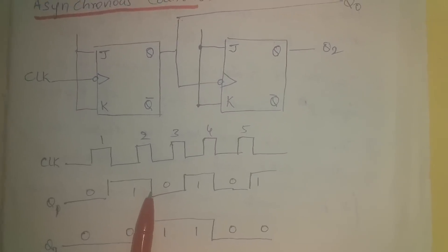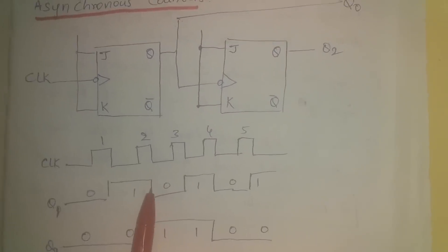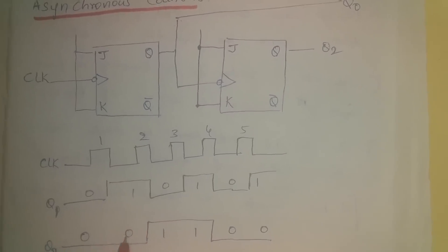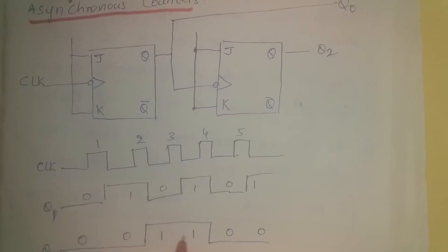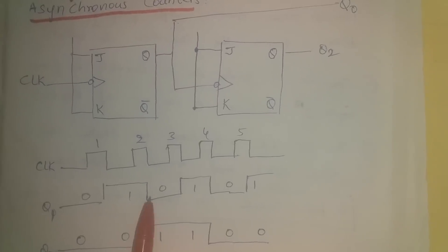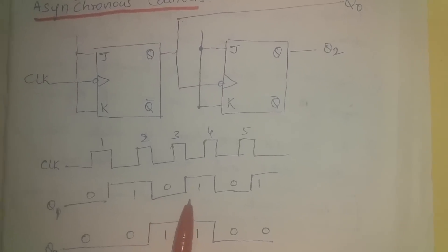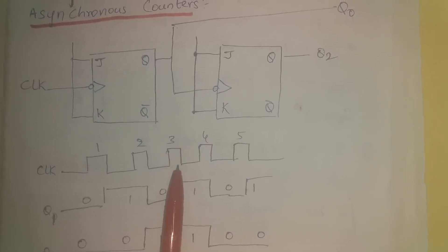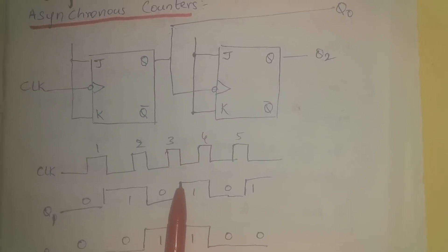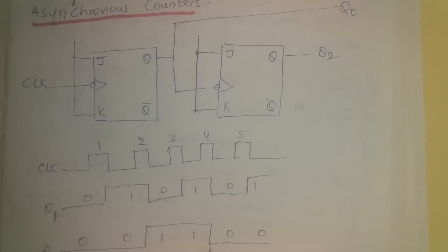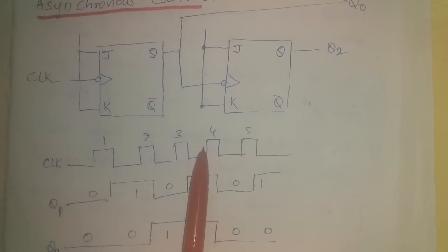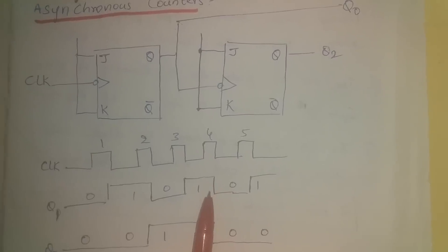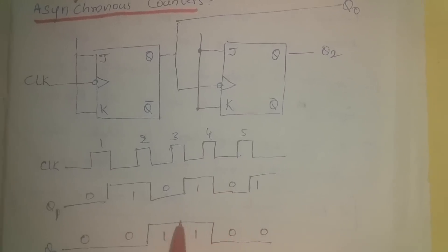Q2 undergoes a transition at the negative edge of the output of the first flip-flop. Since the output of the first flip-flop is now low, Q2 transitions — since the earlier output was 0, it becomes high. Q1 again undergoes a transition at the negative edge of the third clock pulse and becomes high again; Q2 continues in the same state.